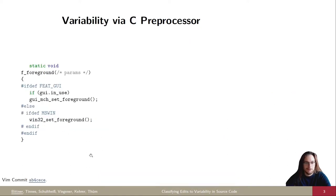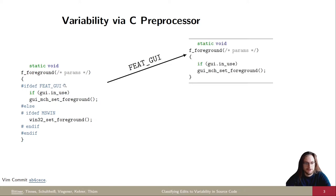So how is it implemented? This is an example from Vim, which is similar to Linux, implemented in C and uses the C preprocessor to implement variability. Parts of the source code are annotated with preprocessor statements to activate or deactivate them depending on certain configurations. For example, if we select the feature GUI, we get these two lines of code in our final variant.